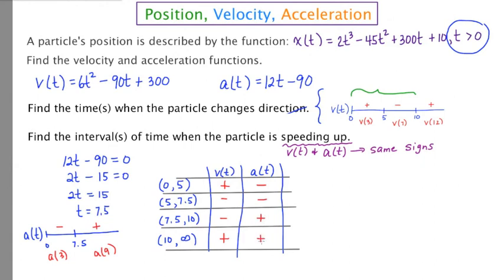Now this chart just really enables me to answer the question very easily. When is the particle speeding up? We said in the very beginning that a particle will speed up if the velocity and acceleration have the same signs. In this first interval, the signs are different, so that's not going to work. But the signs are the same here, and they're also the same here. So that's when the particle is speeding up. You could use interval notation, or you should be prepared to use regular inequality notation. So the signs are the same between 5 and 7.5, and also greater than 10.